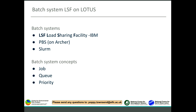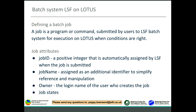Job and queue priority will be covered more in the next webinar as an advanced topic. Briefly, there is priority at the queue level and dynamic priority at the user level. Jobs don't run interactively — they go through the LSF batch system for execution, and when resources are available and free, the job is launched. Once submitted, a job automatically has attributes: the job ID is a positive integer automatically assigned by LSF, printed to screen upon submission.